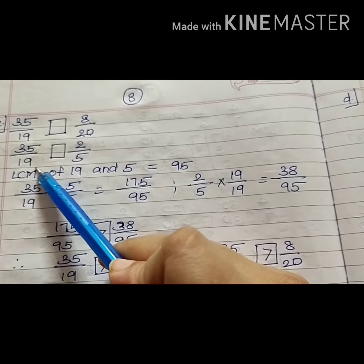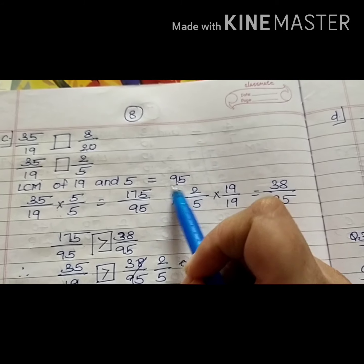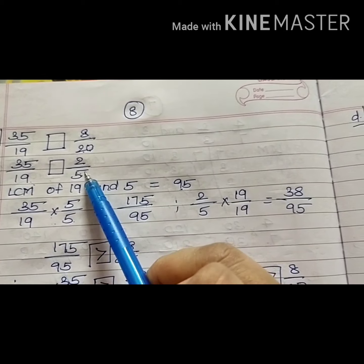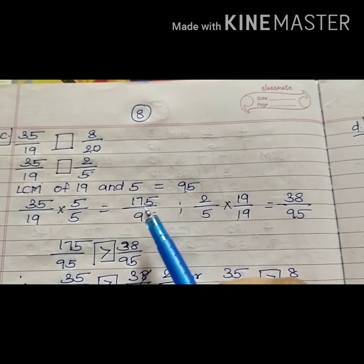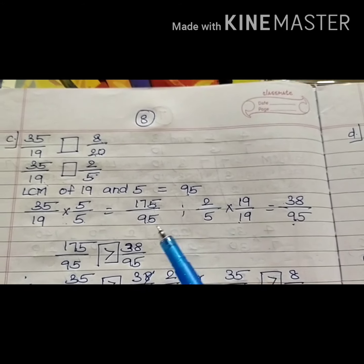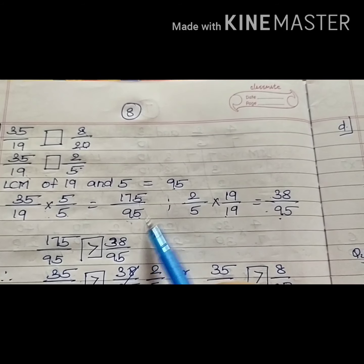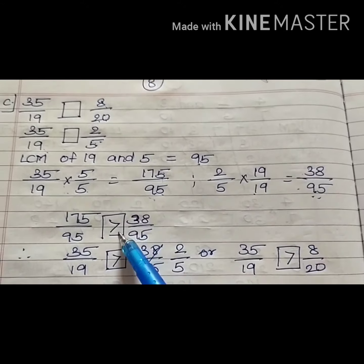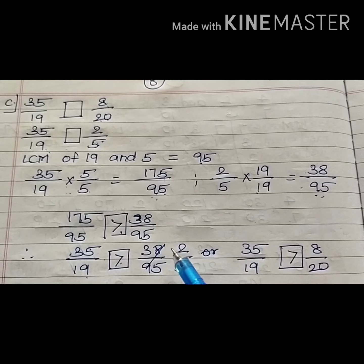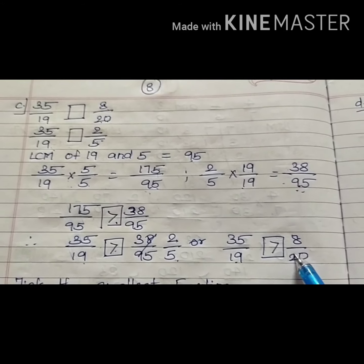Now I take the LCM of 19 and 5, which gives 95. The first fraction multiplied by 5 gives 175 upon 95, and the second fraction multiplied by 19 gives 38 upon 95. Comparing the numerators, 175 upon 95 is greater than 38 upon 95. Going back to the original fractions: 35 upon 19 is greater than 2 upon 5, or equivalently, 35 upon 19 is greater than 8 upon 20.